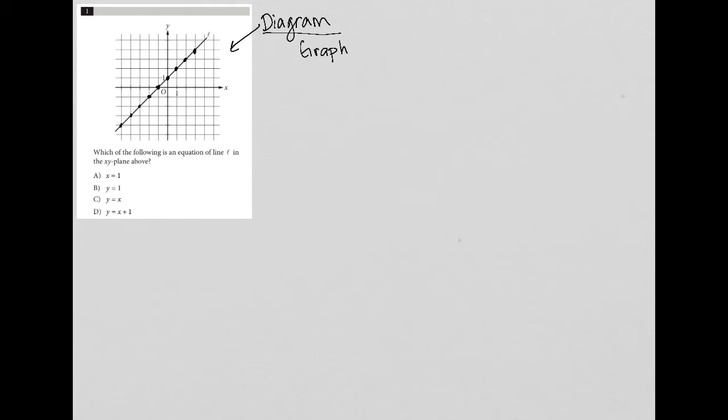So this question says, which of the following is an equation of line L in the xy plane above? Well, anytime I see equation of line, I'm thinking y equals mx plus b, the slope-intercept form. Where m represents the slope and b represents the y-intercept.